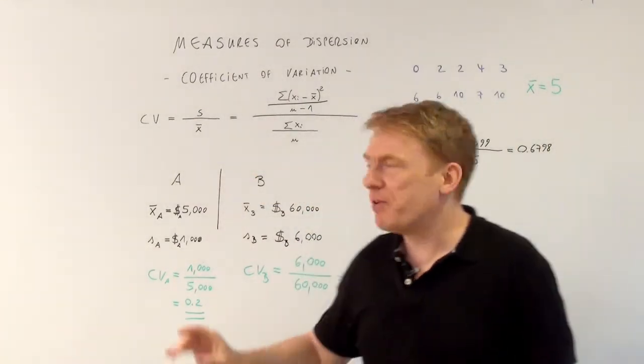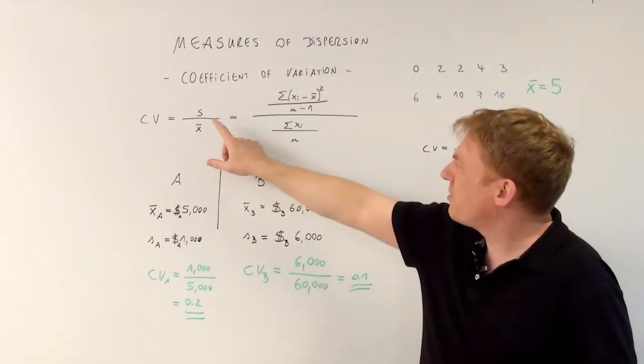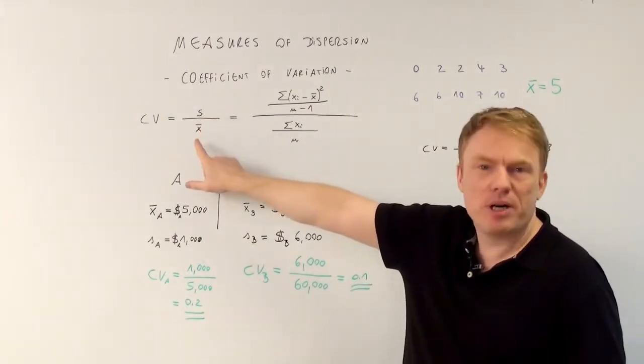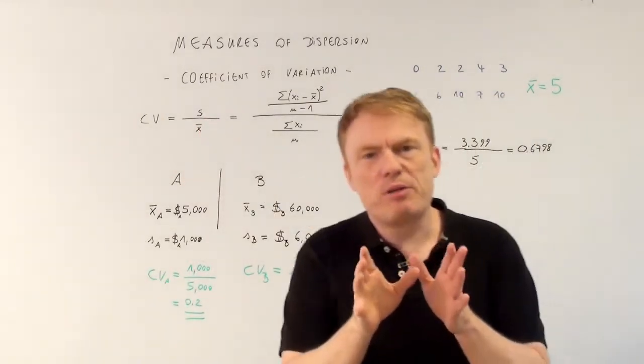Coefficient of variation is defined as the fraction of the standard deviation divided by x-bar, divided by the arithmetic mean.